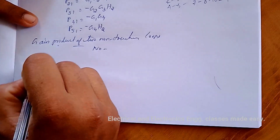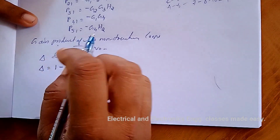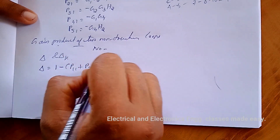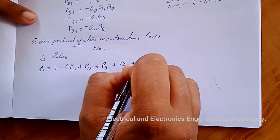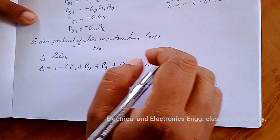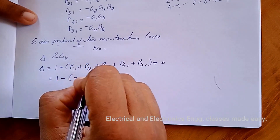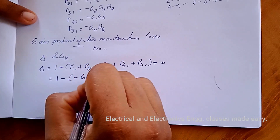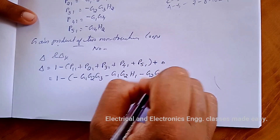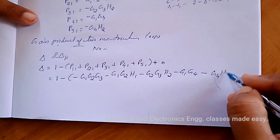Now we find the values for delta and delta_k. Delta equals 1 minus the sum of individual loop gains: P11 + P21 + P31 + P41 + P51. Since there are no two non-touching loops, that term is zero. Substituting: delta = 1 − (−G1·G2·G3) − (−G1·G2·H1) − (−G2·G3·H2) − (−G1·G4) − (−G4·H2) = 1 + G1·G2·G3 + G1·G2·H1 + G2·G3·H2 + G1·G4 + G4·H2.